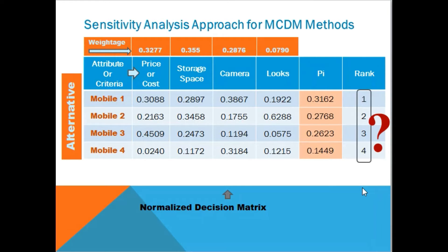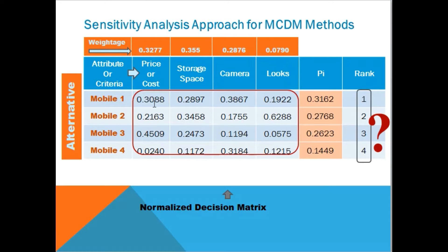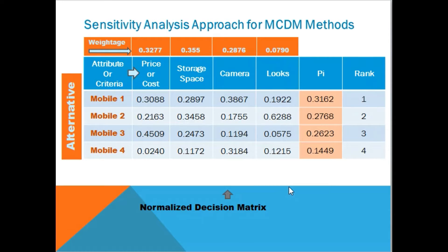For sensitivity analysis, we need to know the parameters on which the final rank of the alternatives depends. The first one is the weights of the criteria, and the second one is the performance measure of the alternatives. If we change these weight values, the rank may change.